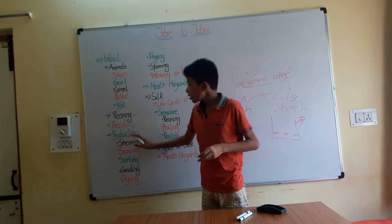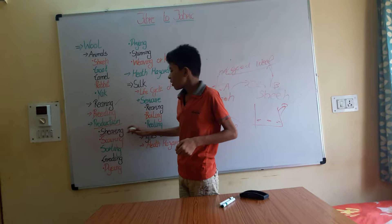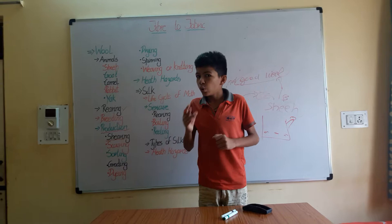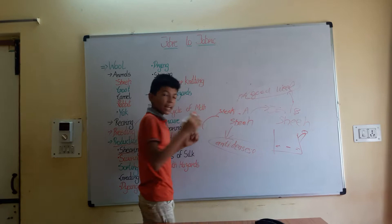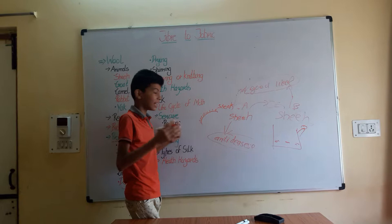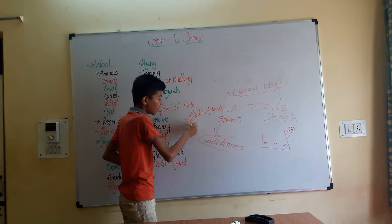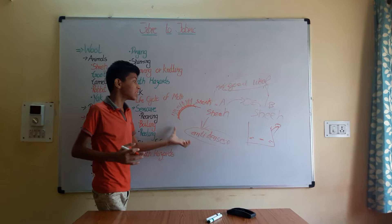Now, how is wool produced? First, we take out the fleece from the animal — this process is called shearing. Shearing is the process of cutting fleece from the animal, and the person who does it is called a shearer. The hairs close to the sheep's skin are very smooth and silky, while the outer hairs are somewhat rough. The shearer cuts the fleece along with some skin but does not harm the animal.